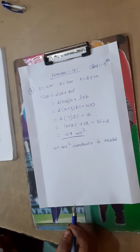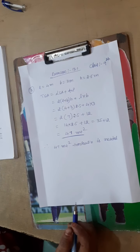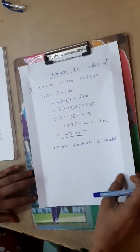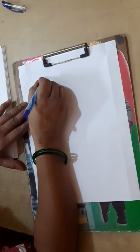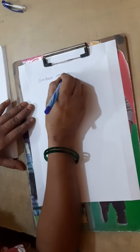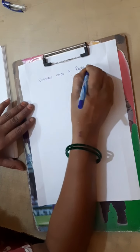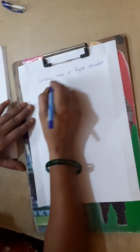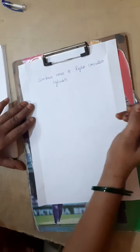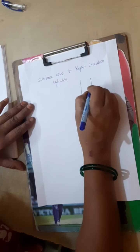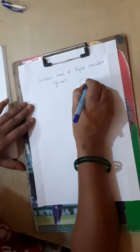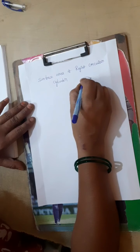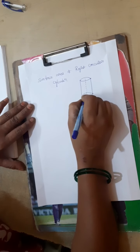Now next exercise — that is surface area of a right circular cylinder. A cylinder is in this shape: it has a height and a radius.